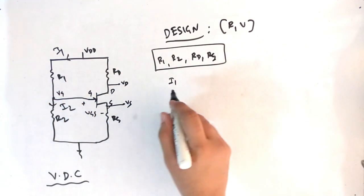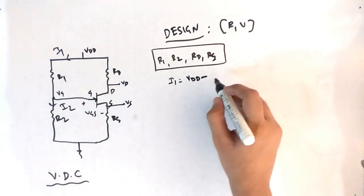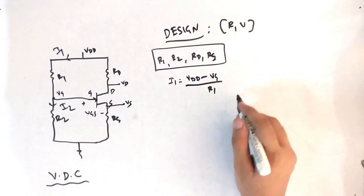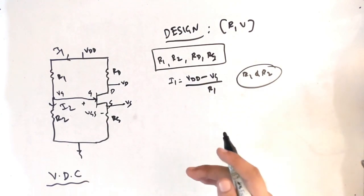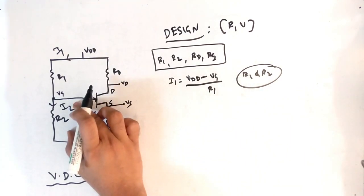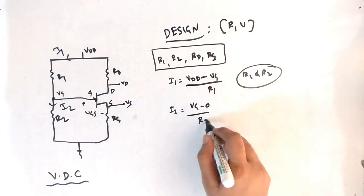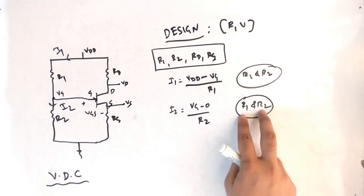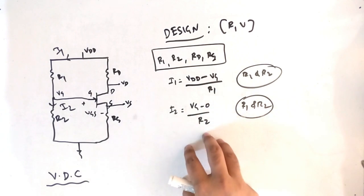Applying KCL at the top node gives: I1 equals (VDD minus VG) divided by R1. This gives one equation in terms of R1. Applying KCL at the gate node gives: I2 equals (VG minus 0) divided by R2. This gives one more equation. So with two unknowns and two equations, you can find the values of R1 and R2.